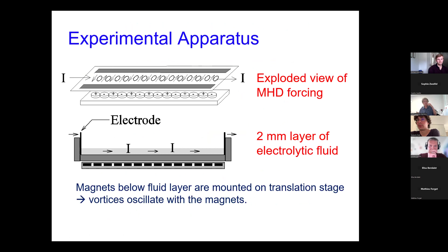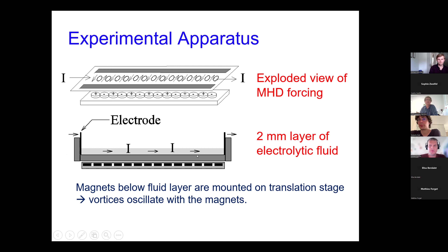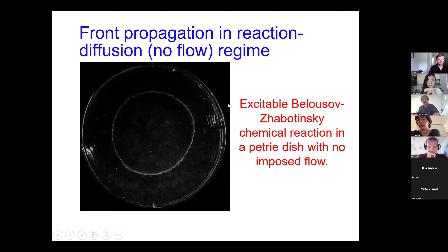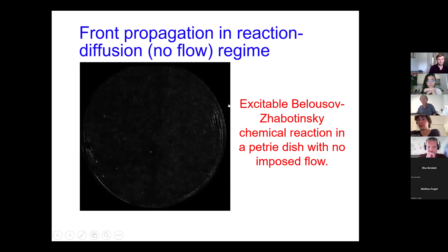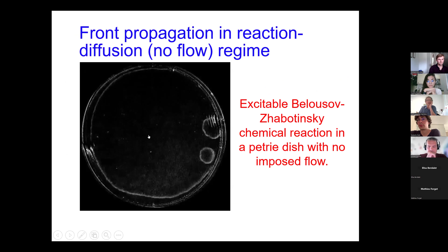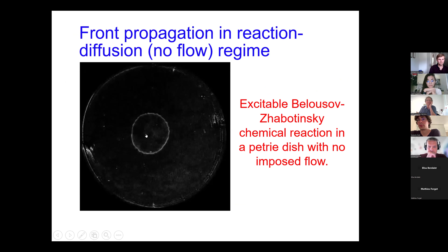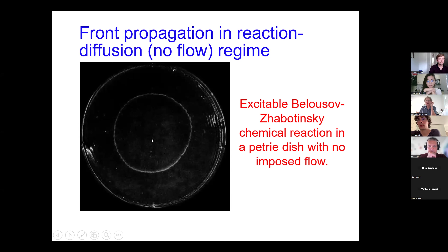I'm going to show you some experiments now where we actually test these things. We generate a chain of vortices using magnetohydrodynamic forcing techniques — basically a chain of alternating magnets underneath a box with a thin layer of an electrolytic fluid. We run a current through that fluid, and that current interacts with the magnets and generates this chain of vortices. It's a beautiful system, very easy to produce in the lab.